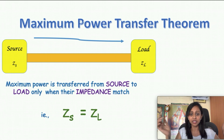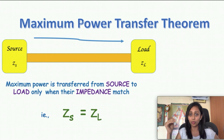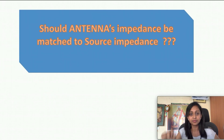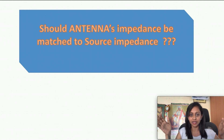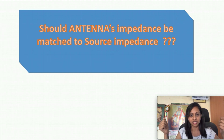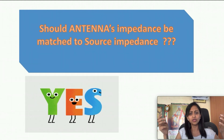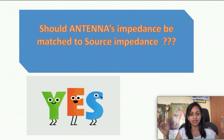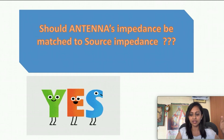Now in a wireless scenario, the signal carried in a wire needs to be thrown out wirelessly. We open-circuited, we tapered, we did all that — and finally, what is at the load? It is the antenna. So now I have my source and at the load end is my antenna. Should the antenna impedance be matched to the source impedance? What does the Maximum Power Transfer Theorem say? The impedance should match. My load is just replaced by an antenna, so the impedance has to match.